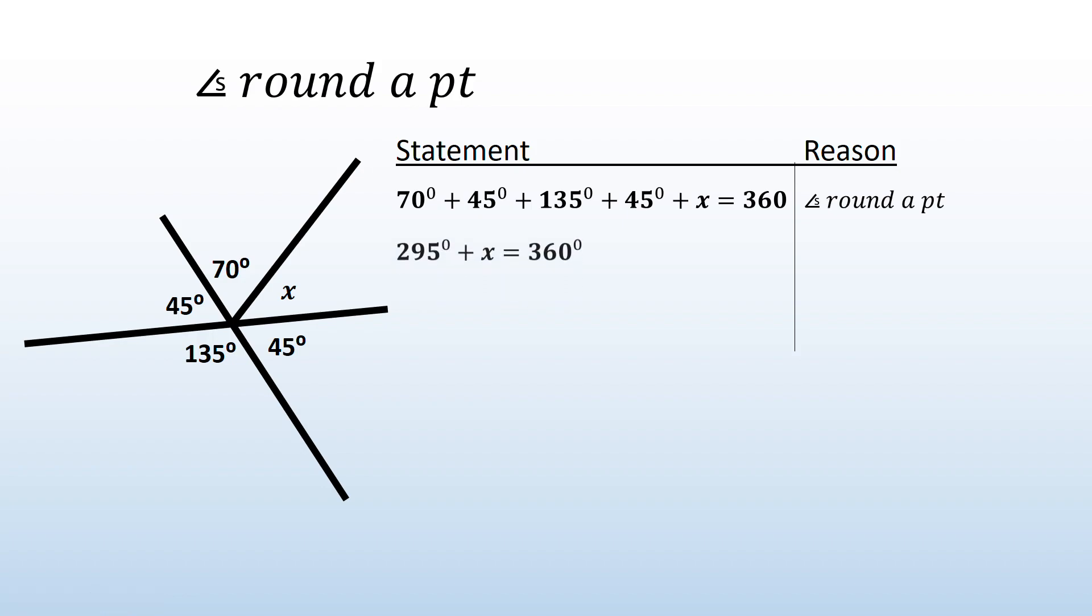Then I can get my like terms together. So if I add all my constants, I'm going to get 295 degrees. Subtract that from 360, and you should get x to be 65 degrees. Please make sure that you've got this example in your books before you carry on with the video.